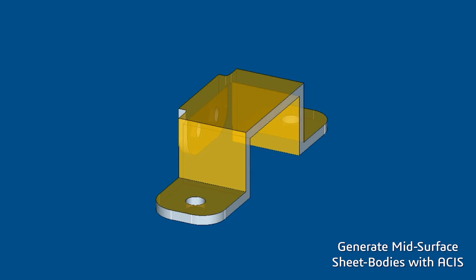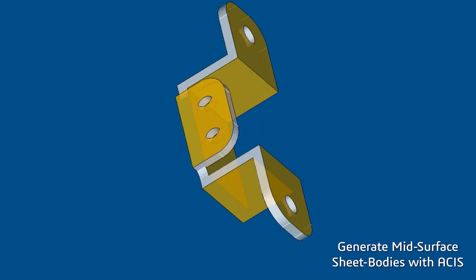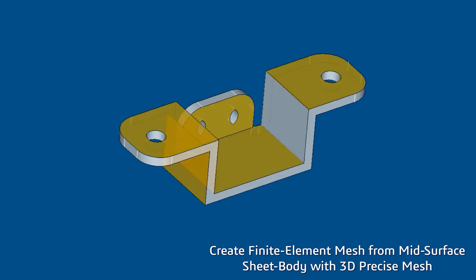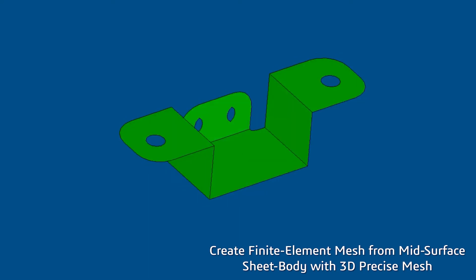Therefore, the new ability of the 3D ACIS Modeler to easily and quickly extract the mid surfaces between opposite faces of thin-walled geometries greatly simplifies finite element workflows. Instead of a series of manual modeling operations to extract the mid-surface for each pair of opposite faces in a complex thin-walled part, the user of a CAE application can click a button in the user interface which then activates an ACIS-enabled workflow to extract the mid-surfaces.